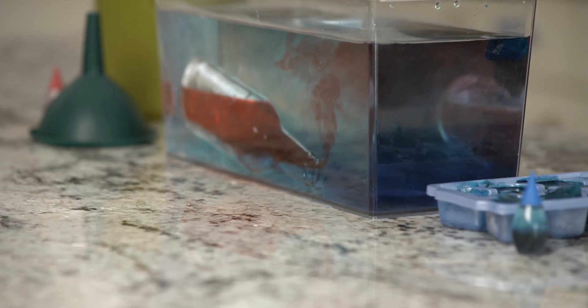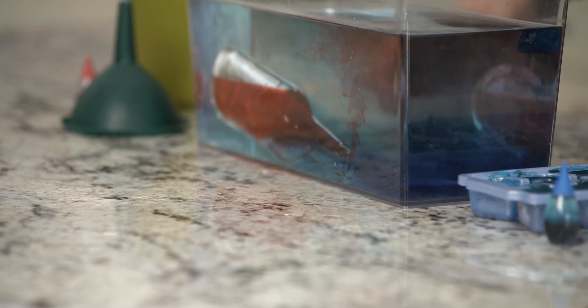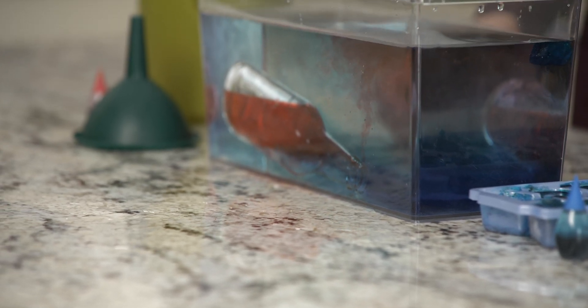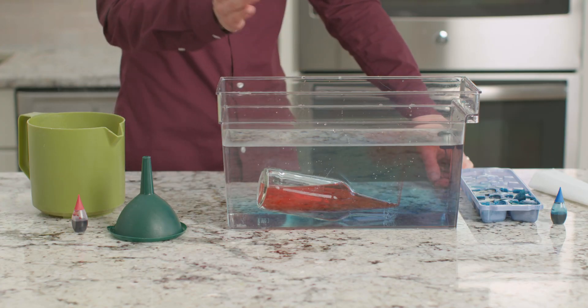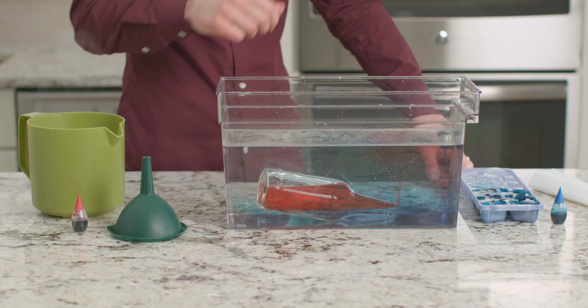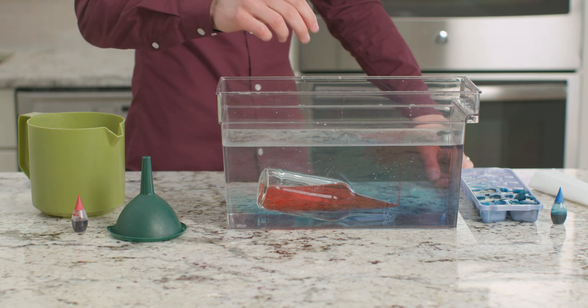After a little while the blue color that drifts near our hot bottle will warm up and begin to rise and our red water that spreads over to the ice cube will begin to cool and sink lower. This is an example of a convection current.